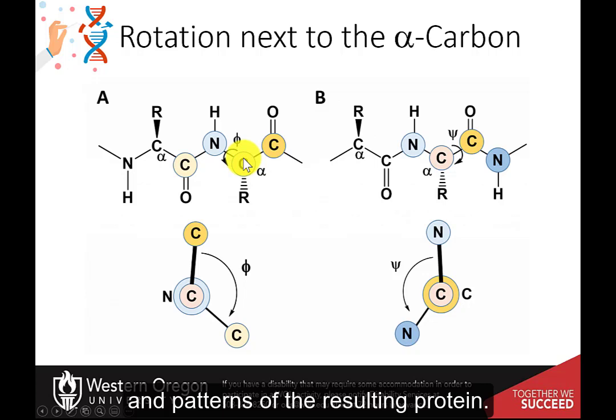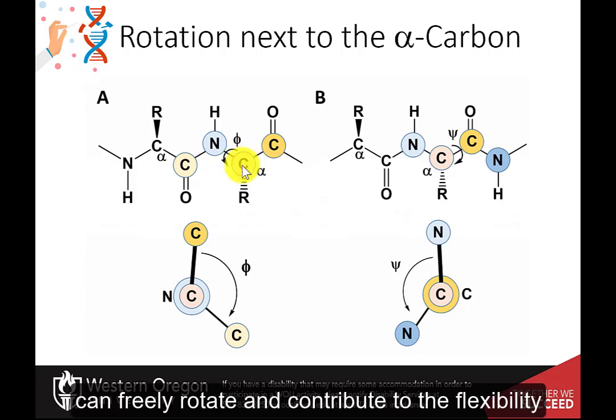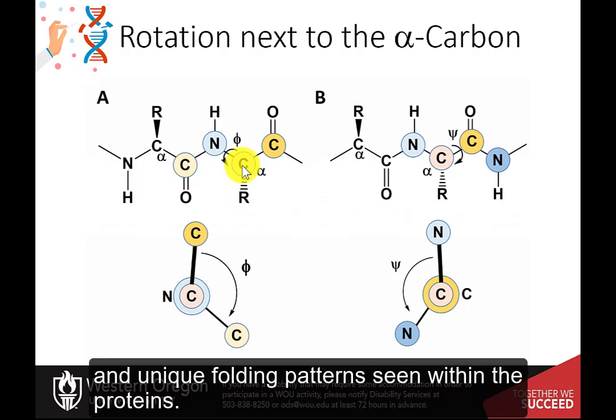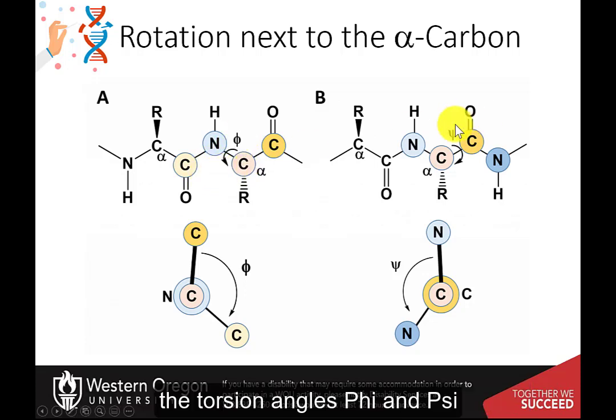However, the bonds around the alpha carbon can freely rotate and contribute to the flexibility and unique folding patterns seen within the proteins. To evaluate these possible rotation patterns that can arise around the alpha carbon, the torsion angles phi and psi are commonly measured.